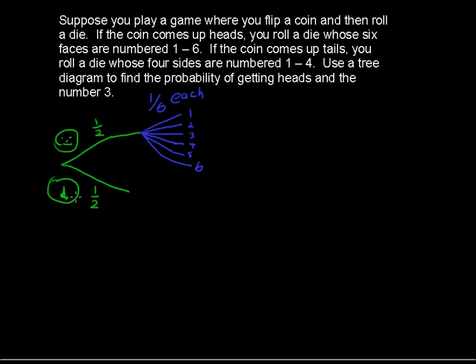If, on the other hand, you get tails, you roll a four-sided die. And you can get either a 1 or a 2 or a 3 or a 4 on this four-sided die.